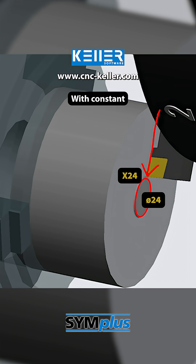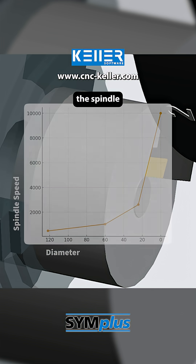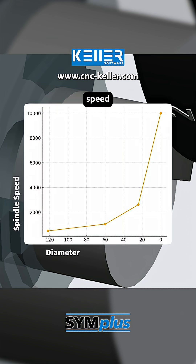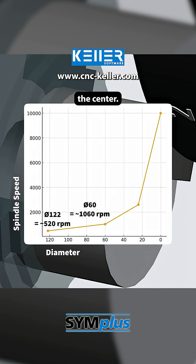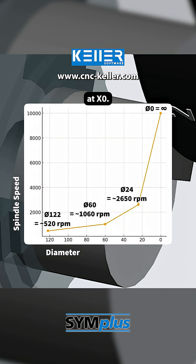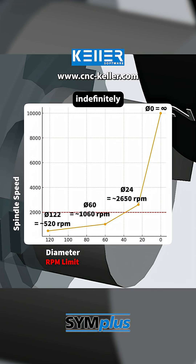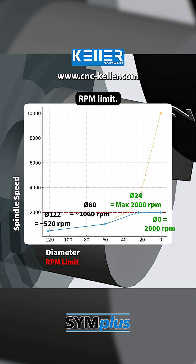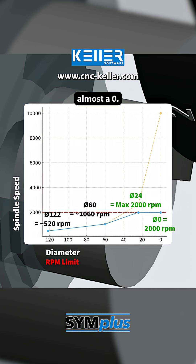Here's why: with constant cutting speed, the spindle speed would have to keep increasing as we move closer to the center — theoretically up to infinity at X0. In practice, however, the spindle cannot accelerate indefinitely due to the RPM limit. As a result, the actual cutting speed drops sharply near the center, almost to zero.